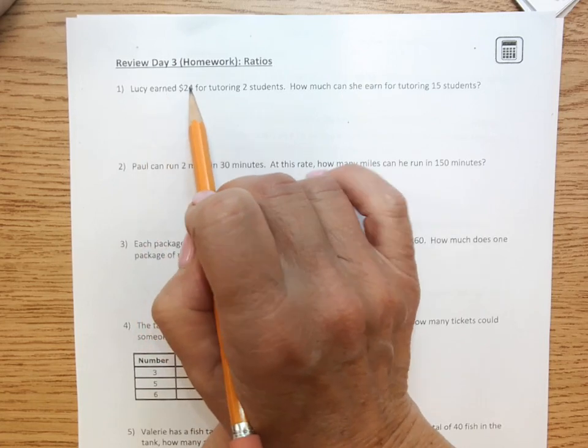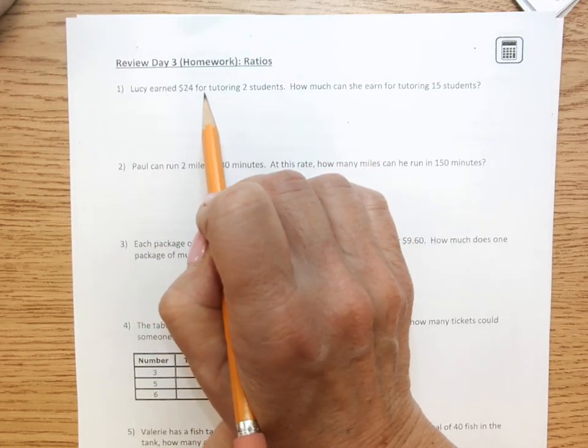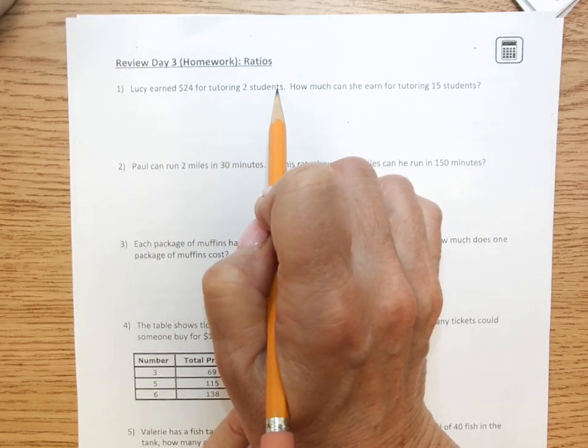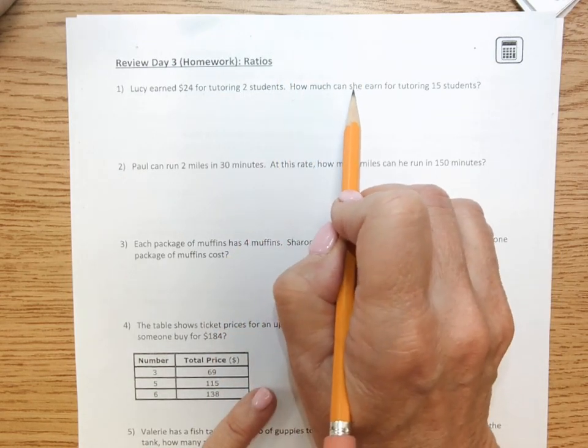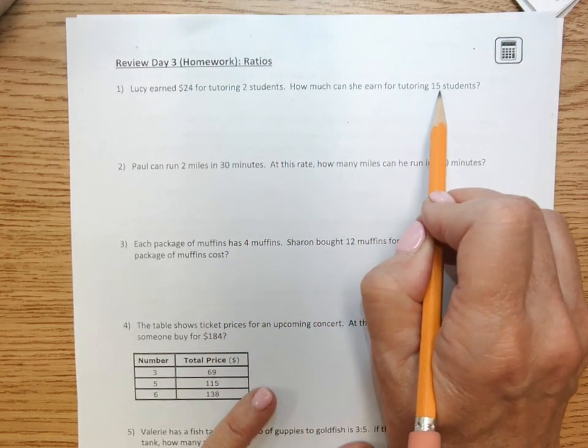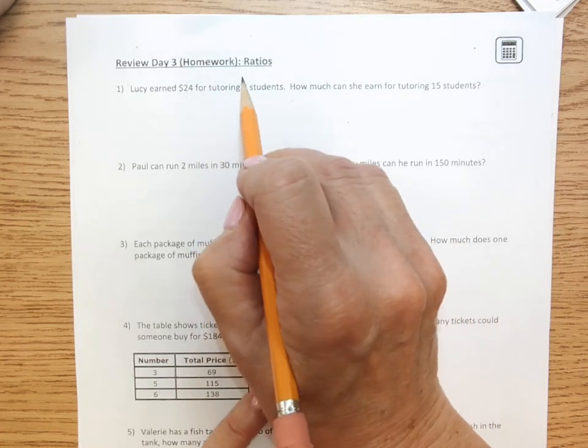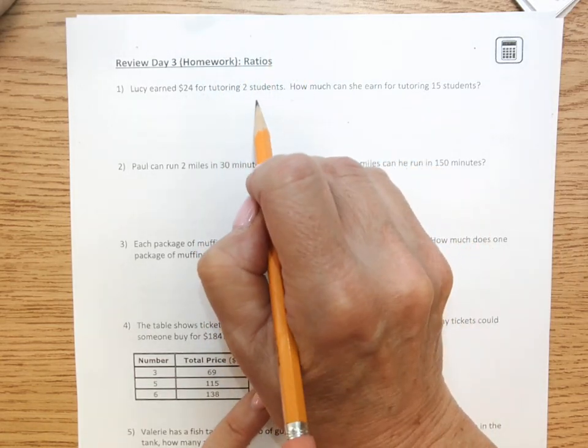Lucy earned $24 for tutoring two students. How much can she earn for tutoring 15 students? So it's a ratio problem. So I'm going to make a t-chart.